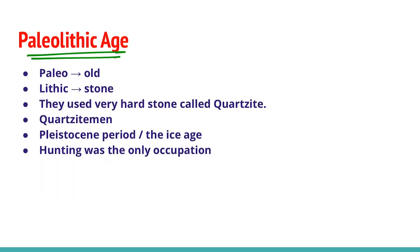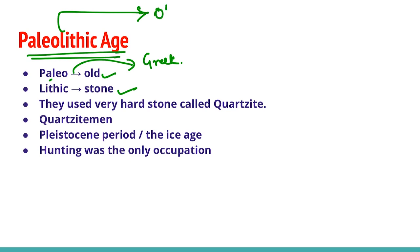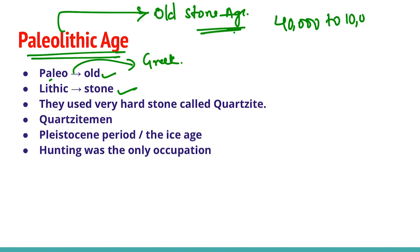The word Paleo is derived from the Greek word meaning 'old,' and lithic means 'stone,' so Paleolithic is known as the Old Stone Age. This period existed between 40,000 to 10,000 BCE. During this time man used rough and undressed stones fitted to stick or bone handles. They used a very hard stone called Quartzite, and that's why people of the Paleolithic age are called Quartzite men.